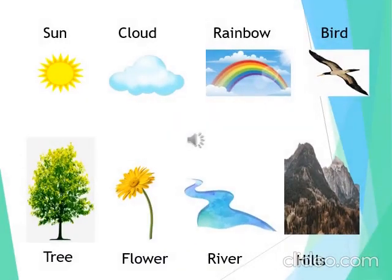Now boys, you will repeat after me. Sun. Cloud. Rainbow. Bird. Tree. Flower. River. Hills. Have you got it? Sun, cloud, rainbow, bird, tree, flower, river, hills.